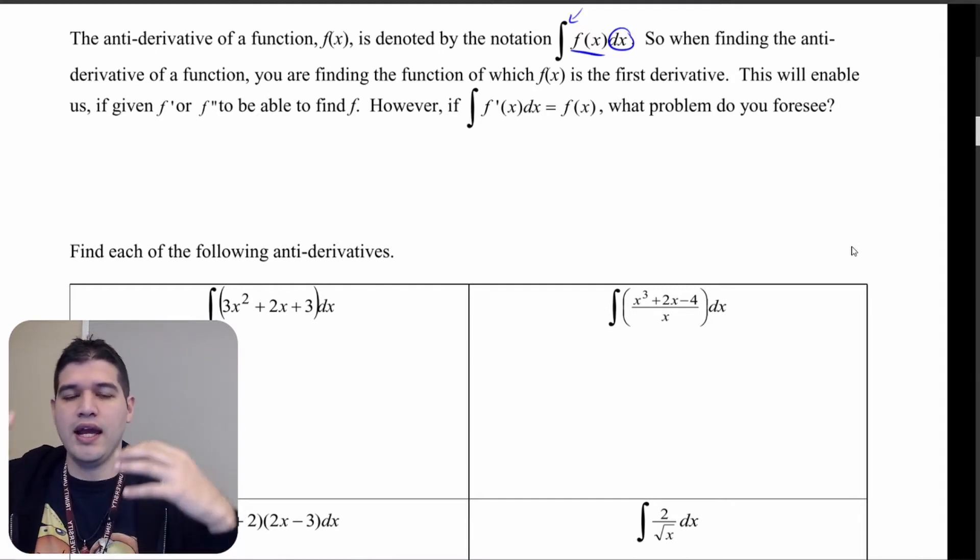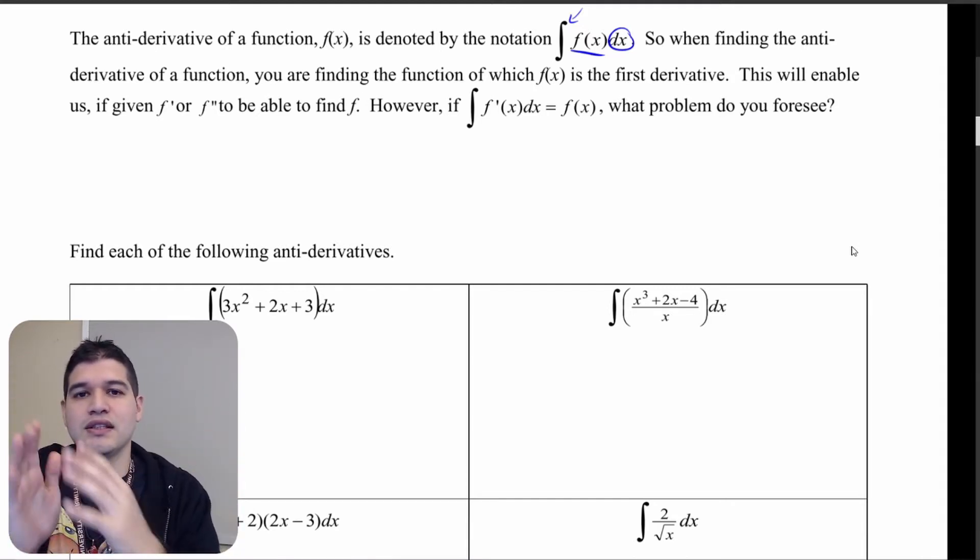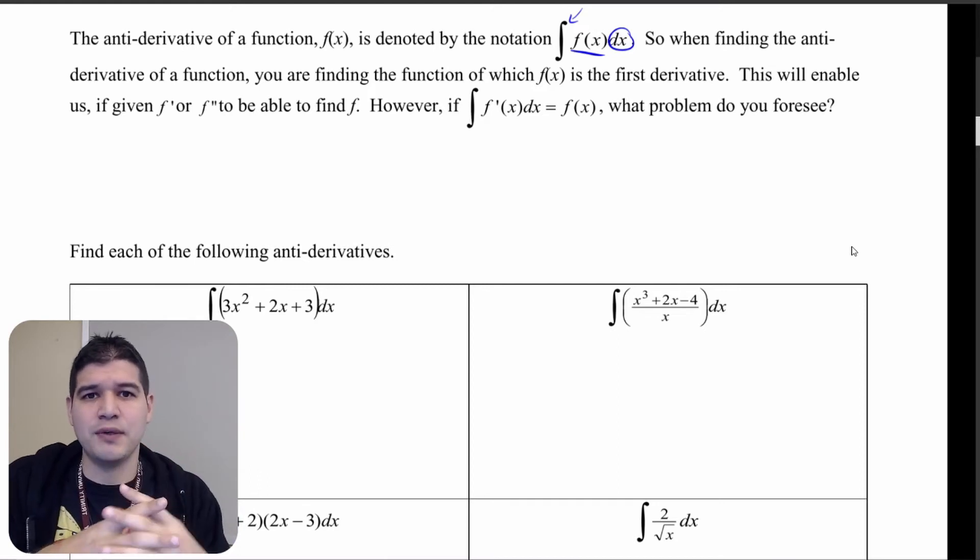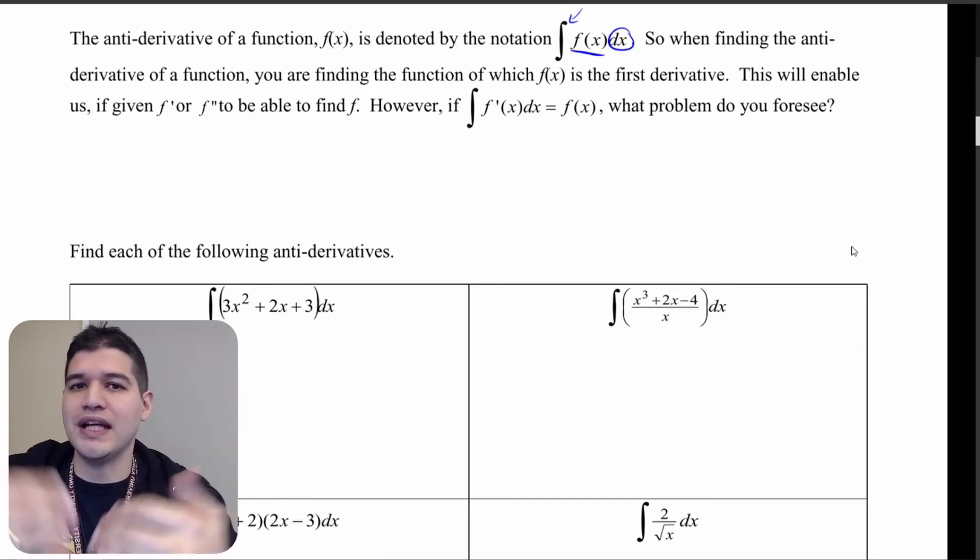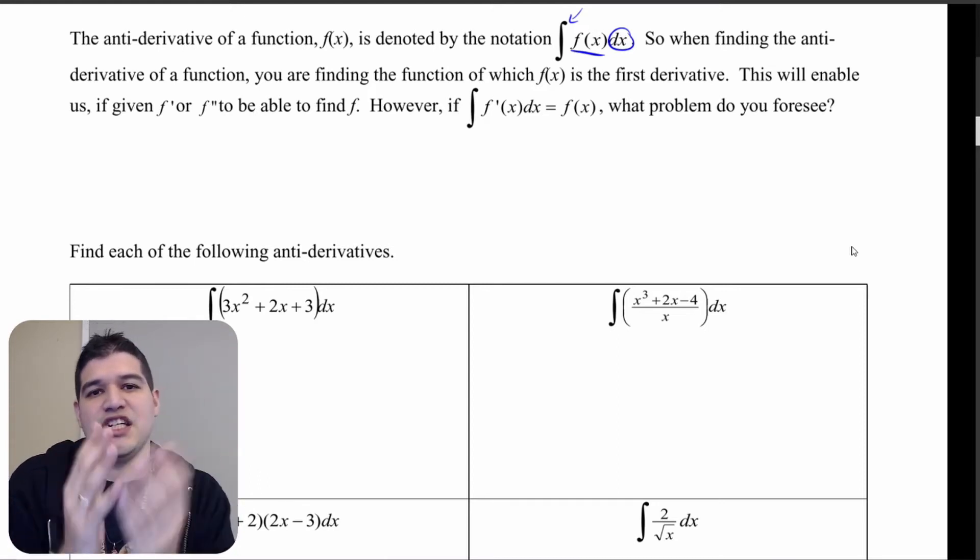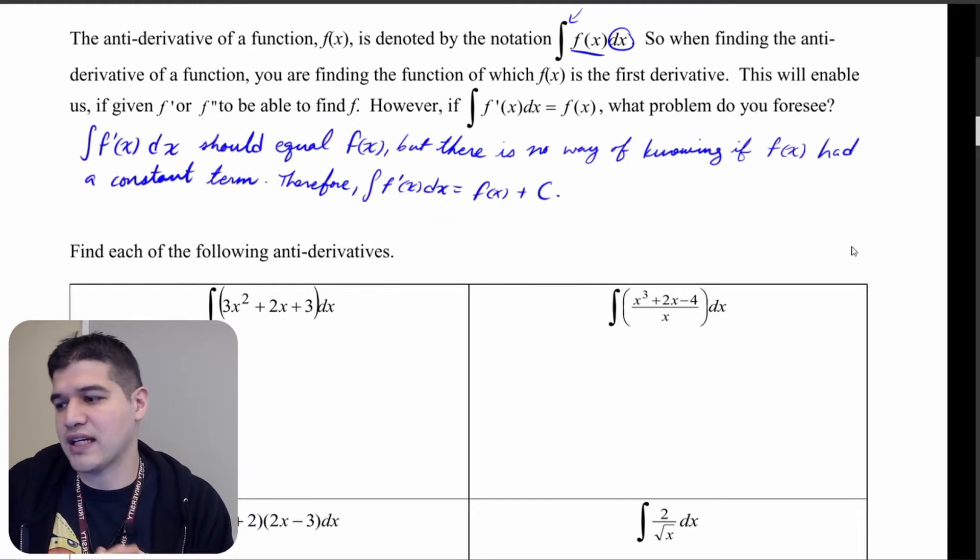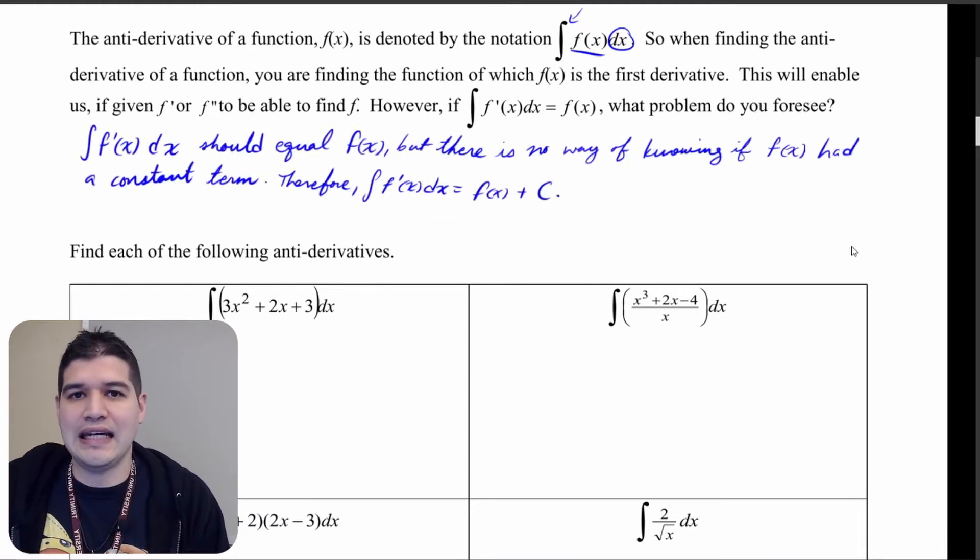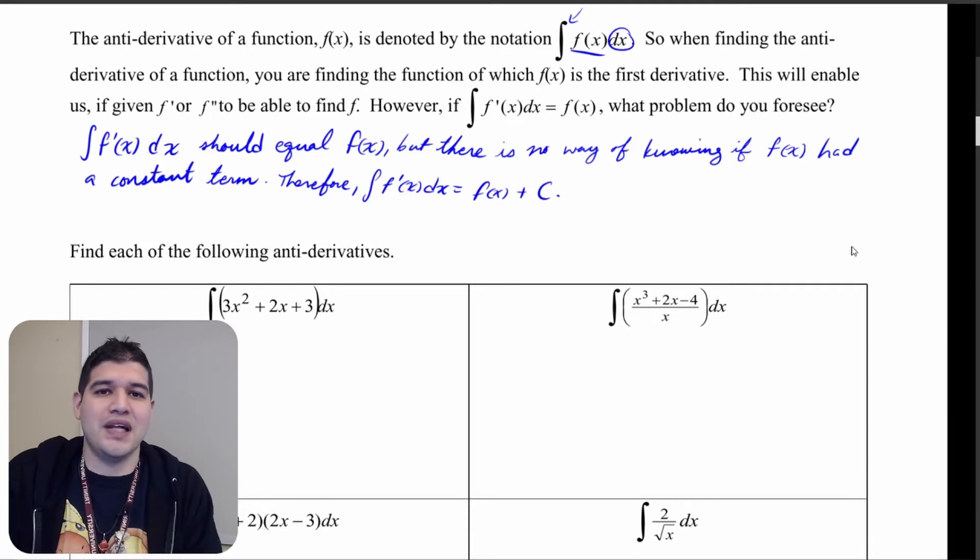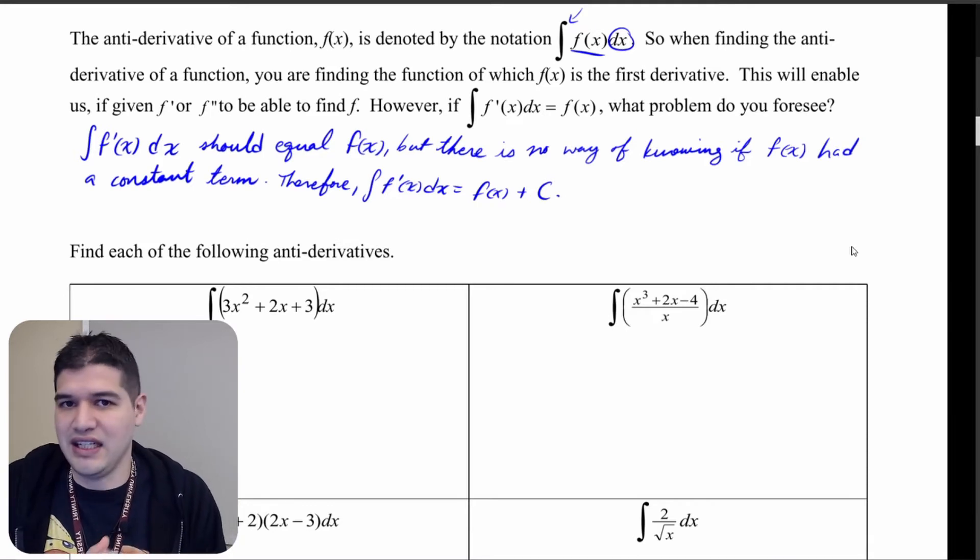Anytime we're adding those constants, the derivative of a constant is 0, but when we're going back in the other direction we don't have any information on that constant. So since we don't know any information about that constant, we always add in a constant when we find that antiderivative, denoted with plus C at the end.